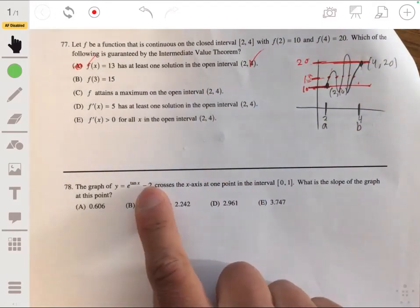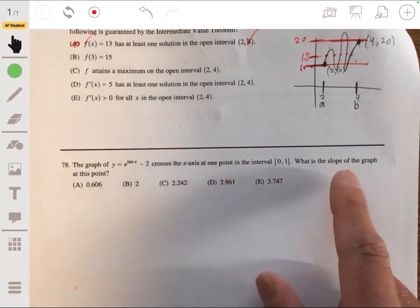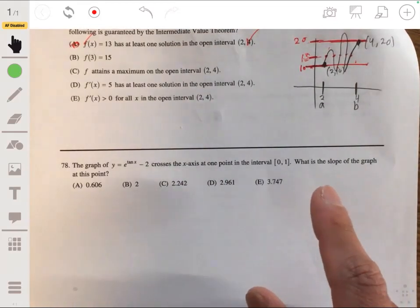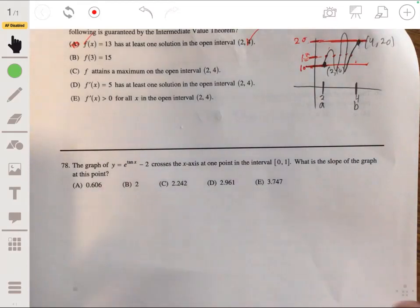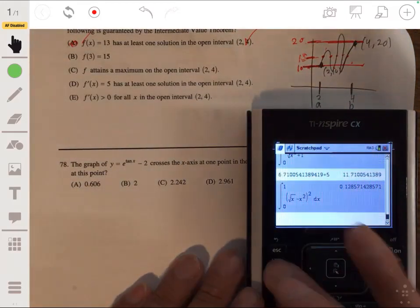Okay, so let's graph this with our calculator and let's find what the derivative value is at that point. Because the slope of the graph is approximated by the value of the derivative, which is the slope of the tangent line at that point. So let me go to my graphing feature.